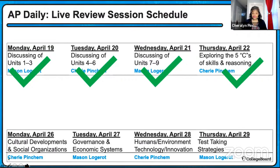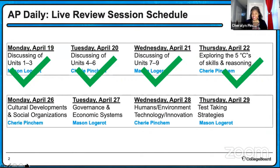Now let's look at what we're doing this week. This week we're going to focus on the themes. Today I'm going to focus on the theme of cultural development and social organization. Tomorrow, Mason's going to review the themes of governance and economic systems. I'll be back Wednesday to look at humans and their environment, along with the theme of technology and innovation. And then on Thursday, we'll do some test-taking strategies to get you ready for the AP exam.